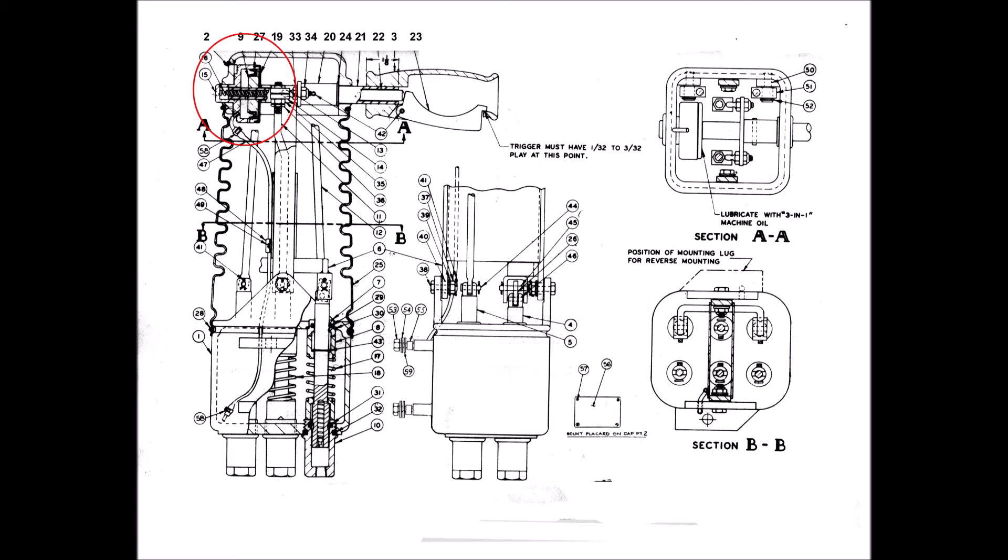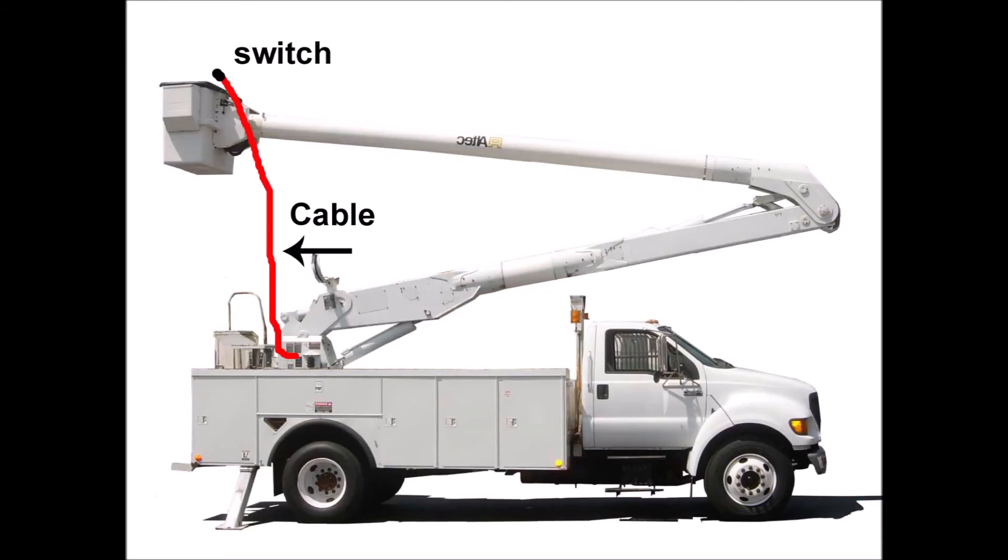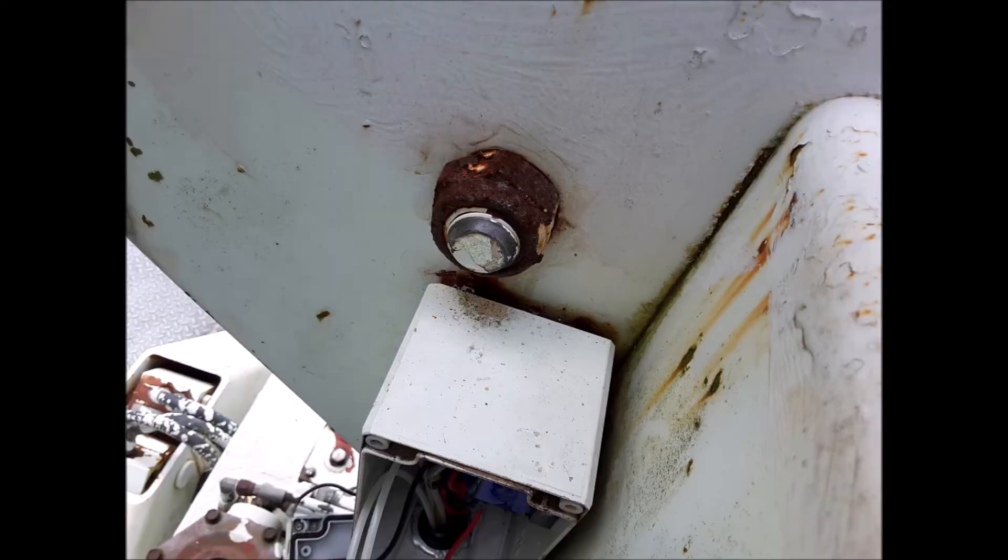So my next best thing was to simply jump the existing switch on the platform with a vehicle starter or jumper switch and a length of 50 feet of double strand wire like an extension cable. Initially I used an old vacuum cleaner cord.